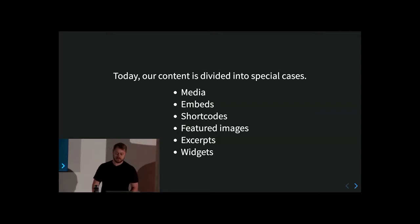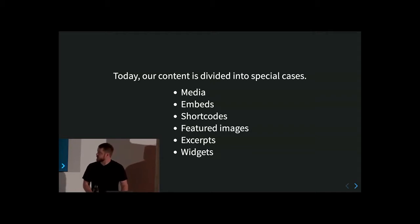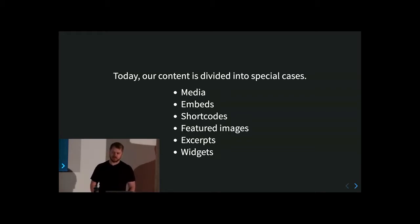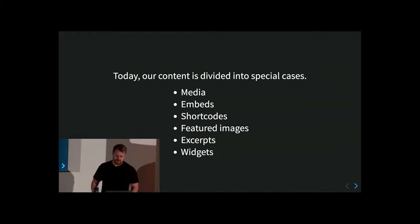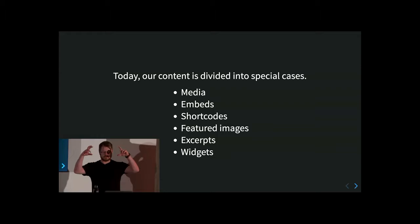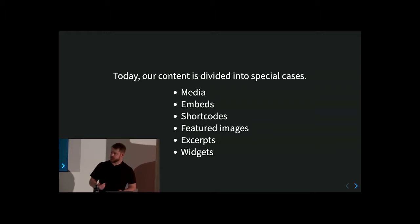Today our content in WordPress is divided — expressed by special cases. First we have media, which is used for images and other approved assets. Then we have embeds, which refer to external content and allow us to include it. Then we have shortcodes. If you're not familiar with shortcodes, they're another way to insert special content. For example, in WordPress core there's a playlist shortcode where you'd express the word 'playlist' in square brackets, type an IDs parameter, find the IDs of the audio clips you want, and specify those.